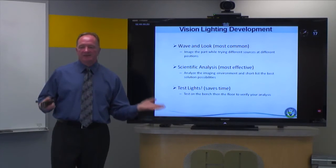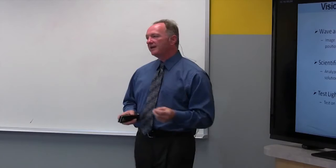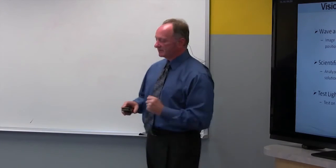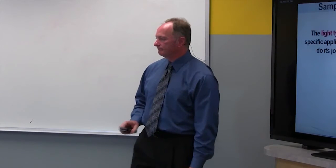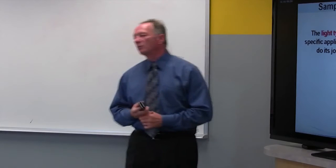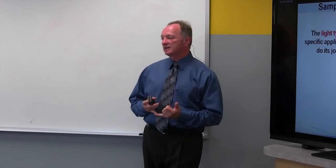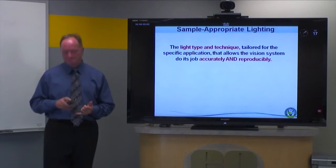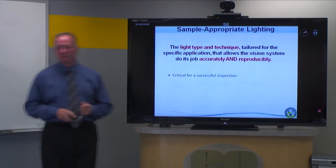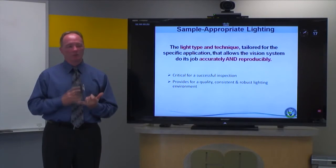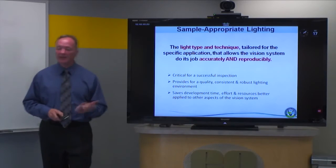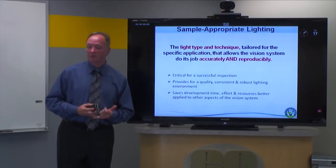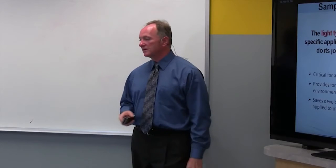Testing lights: I can stand here and prognosticate all day, but the bottom line is you still sometimes have to get some samples, get some lights, and test them. The term 'sample appropriate lighting' refers to the light type and technique tailored for your specific application that allows the vision system to do its job accurately and reproducibly. This is critical for a successful inspection — robustness, consistency, and quality — and it also saves development time.